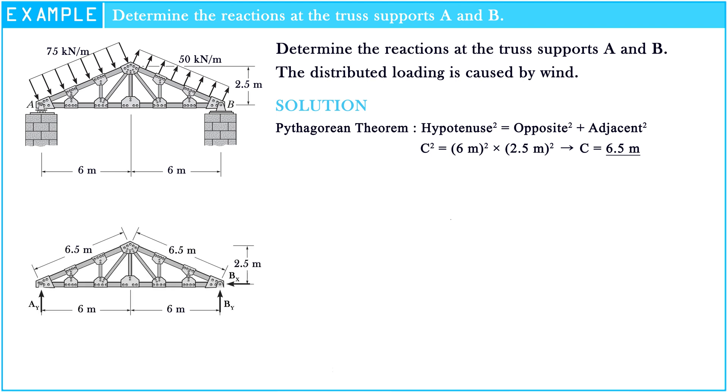Look at the figure of the problem. The loads that applied on the truss are distributed loads. In this case, we would like to convert those loads to point loads. At side A, 75 kN per meter multiply by 6.5 meters is equal to 487.5 kN. At side B, 50 kN per meter multiply by 6.5 meters is equal to 325 kN.